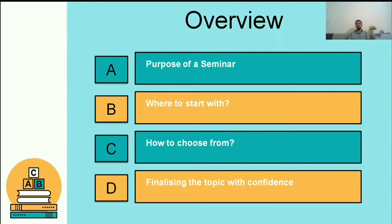You may think: I have learned so many subjects and so many things are available, but which would be a better one? We will discuss how to choose from the large number of topics and resources available. Finally, we will see how to finalize the topic with confidence. If you have done steps A, B, and C properly in the systematic way I am going to describe, you can calmly reach that final step.